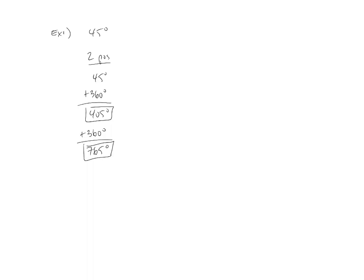As for the two negative coterminal angles, if I start at 45, now I would move in the opposite direction, and so I would subtract 360, which would give us negative 315. If I subtract another 360, I get a negative 675. And so all four of those boxed-in angles are coterminal with 45 degrees. They would still put our terminal side at the same place as our 45-degree angle.